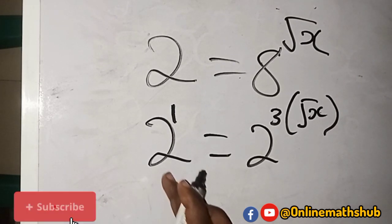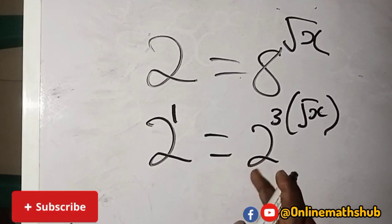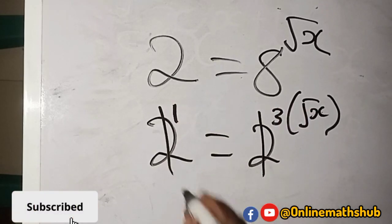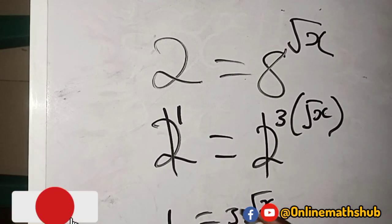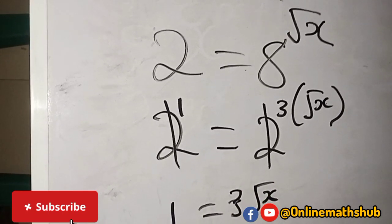This 2 can also be written as 2 raised to power 1. Since the powers are the same, I can cancel them and I will have that 1 is equal to 3 root x.